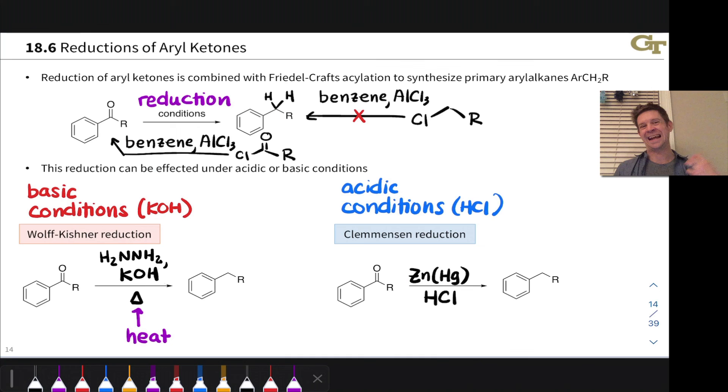So zinc and mercury are sort of the active reducing agents supplying the electrons. And HCl provides protons that serve as the H's that ultimately end up here. All right, those H's ultimately come from HCl.